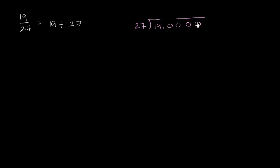because 27 is larger than 19 and it doesn't divide perfectly. So let's get into this. 27 doesn't go into 1. It doesn't go into 19. It does go into 190.